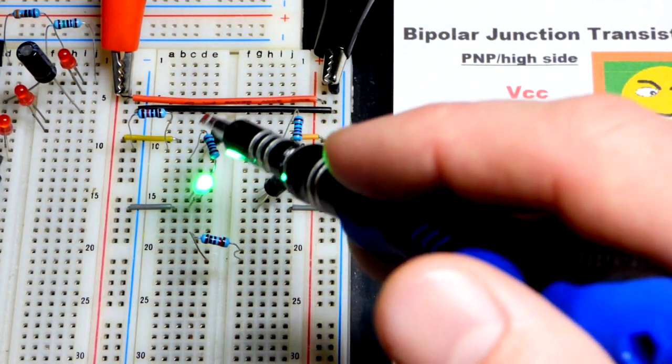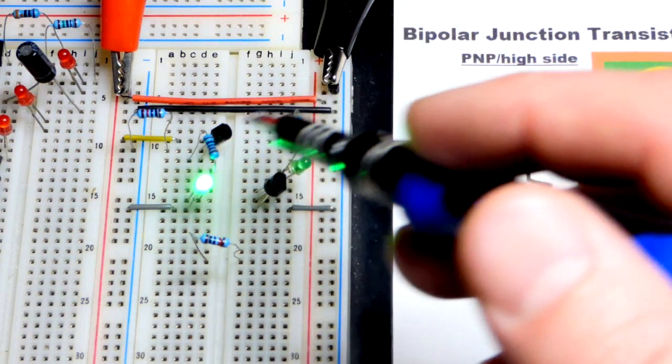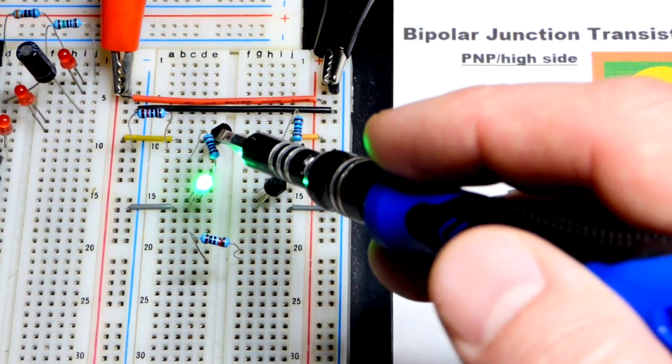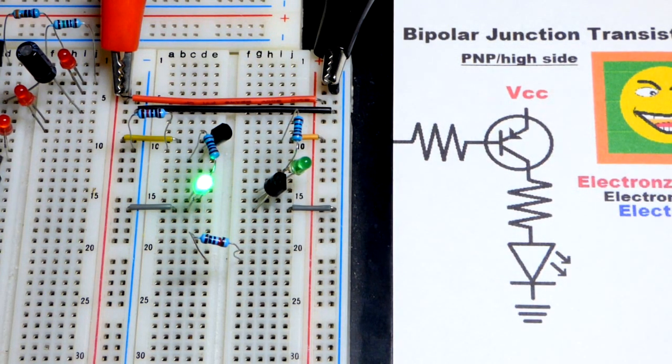Once that little current is flowing from the more positive emitter to the base, the base more negative, that allows the transistor to conduct fully. And the resistor and LED will limit current at that point.